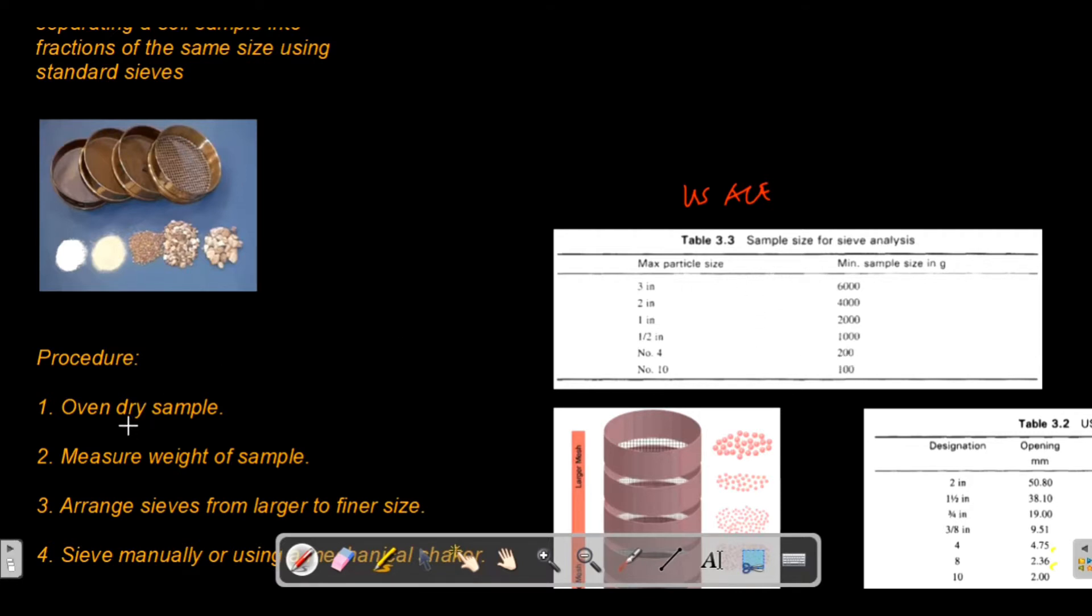The first thing you have to do is to oven dry the sample. Make sure you have an oven available in your laboratory. ASTM recommends an oven capable of maintaining at least 110 plus minus 5 degrees Celsius. But if you don't have any oven available, you can dry the sample using fire as long as the sample is dried before weighing.